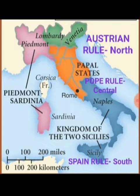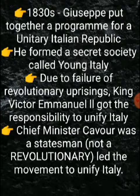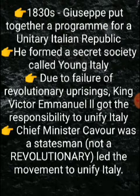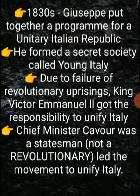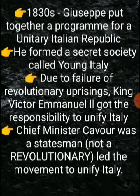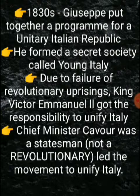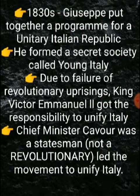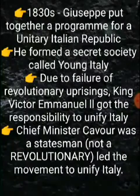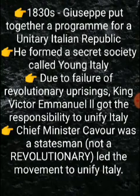Looking at the start of the revolution and its leaders — in 1830, Mazzini was a key figure. In 1830, Mazzini made a secret society called Young Italy so that the idea of unification could spread throughout Italy. However, they got a failure and did not succeed in their efforts.